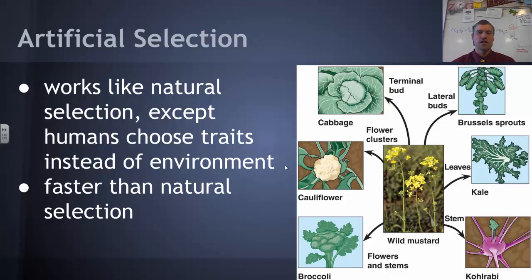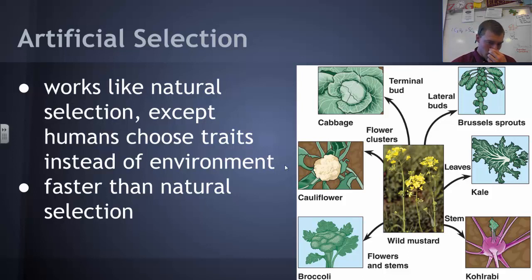An example of natural selection is artificial selection. It works very similarly to natural selection, except here humans choose the traits instead of the environment. Rather than organisms randomly being fit and surviving in their environment, humans are actually selecting the traits we believe are fittest — like being able to grow fast, having the best or largest fruit, and similar traits.